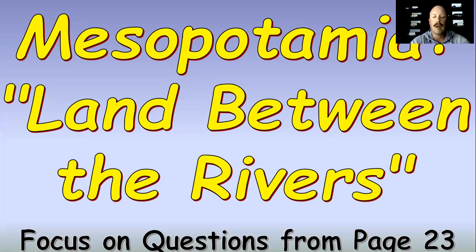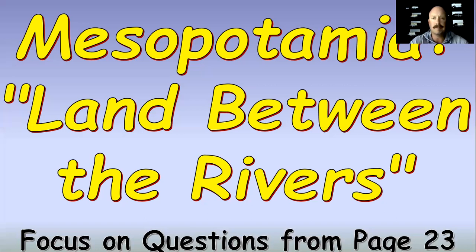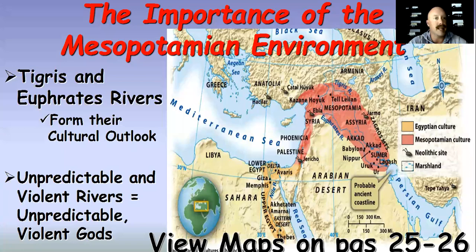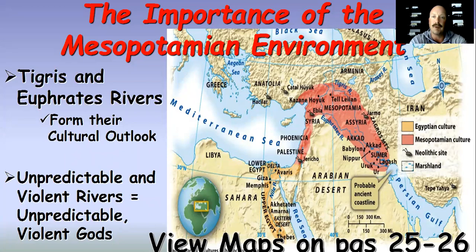Looking at our PowerPoint, Mesopotamia is the land between the two rivers — that's essentially what that word means. It's a Greek word: meso meaning middle, and potamas meaning between the two rivers. You see the two rivers right here, the Tigris and the Euphrates. The Tigris to the north, the Euphrates to the south. And in that land, not all of it in between the Tigris and Euphrates is fertile.